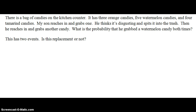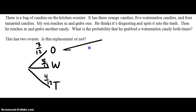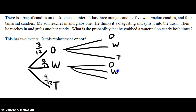Okay, so you are back. We are drawing a tree diagram here. We have three orange, five watermelon, four tamarind — for a total of twelve. So in the first draw, it could be orange, watermelon, or tamarind: three out of twelve, five out of twelve, and four out of twelve. And then each of those could also be orange, watermelon, or tamarind in the second draw.